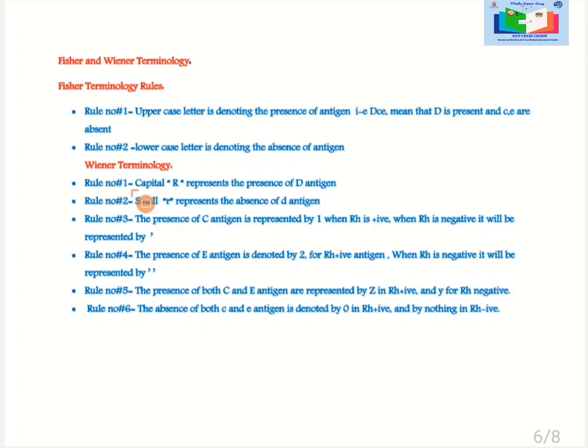Wiener terminology. Rule number 1: Capital R represents the presence of d antigen. Rule number 2: Small r represents the absence of d antigen. Rule number 3: The presence of capital C antigen is represented by 1 when Rh is positive. When Rh is negative it will be represented by 1 prime. Rule number 4: The presence of e antigen is denoted by 2 for Rh positive antigen. When Rh is negative it will be represented by double prime. Rule number 5: The presence of both C and E antigen are represented by Z in Rh positive and Y for Rh negative. Rule number 6: The absence of both C and E antigen is denoted by 0 in Rh positive and by nothing in Rh negative.